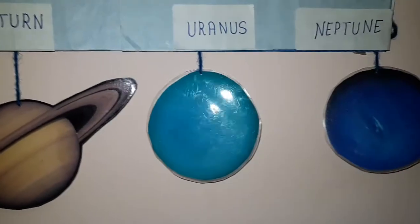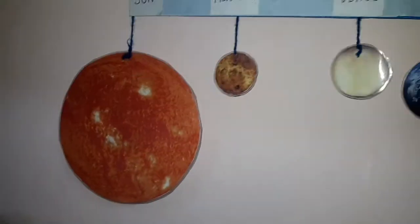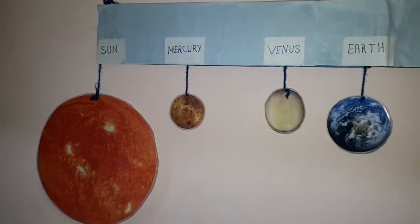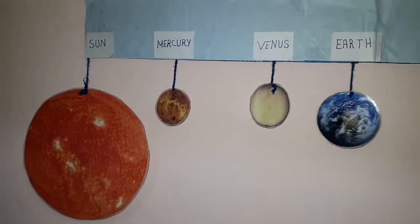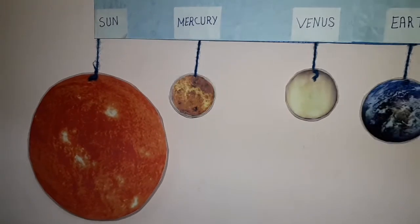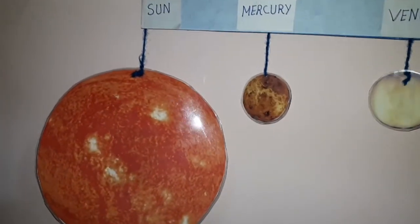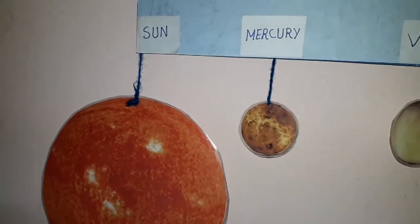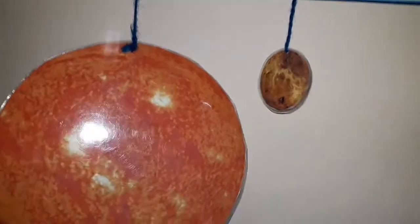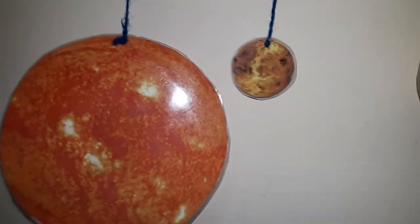It's pretty easy for primary classes to make. While making the model of the solar system, it's required to hang all the planets in proper sequence. Now I am going to tell you about the Sun and the individual planets.